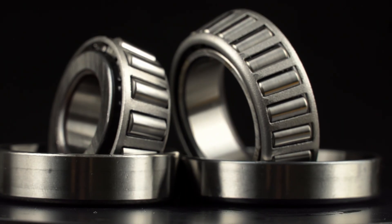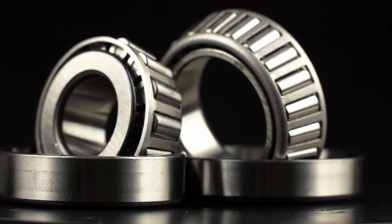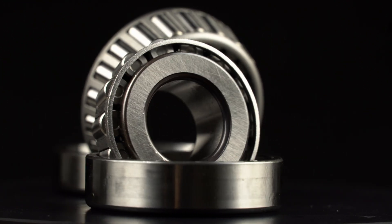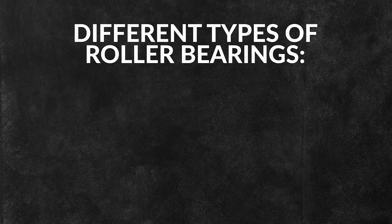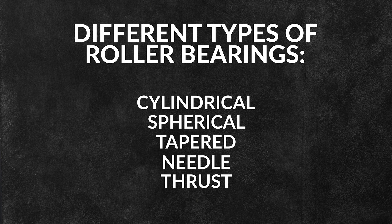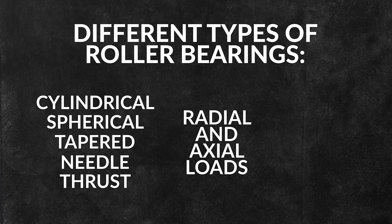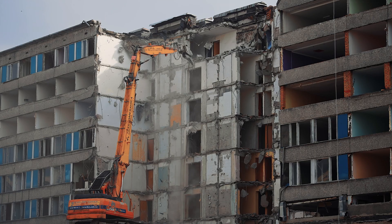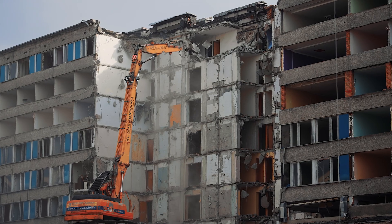Similar to ball bearings, roller bearings use cylindrical rollers instead of spheres to separate bearing races. These can typically support heavier loads than ball bearings due to the larger contact area. Different types of roller bearings can accommodate both radial and axial loads, as well as misalignment. These are commonly found in conveyor systems, wheel hubs, and heavy-duty construction vehicles.